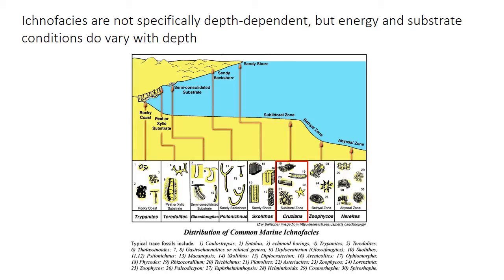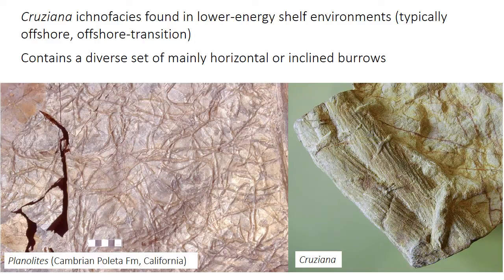The Cruziana ichnofacies occurs in lower-energy shelf environments like the offshore transition or the offshore. It contains a very diverse suite of burrows, but primarily horizontal ones. Planolites, on the left — this mass of tangled lines — is a simple, unlined, unbranched horizontal tube and one of the most common trace fossils. On the right is Cruziana, the name-bearer of the ichnofacies. It's produced by trilobites or arthropods — a bilobed furrow with leg scratch marks where the organism dug in as it moved along the sediment.